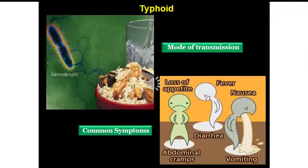One more acute disease is typhoid. It is caused by Salmonella typhi. This is the protozoan and it can enter our body through contaminated food and contaminated water — that is the mode of transmission. Common symptoms include loss of appetite, abdominal cramps, fever, and nausea. Many times there will be high fever as the body has infection. The person may vomit also because the toxic substances in the food have to be thrown out either in the form of loose motions or vomiting. So typhoid is an acute disease.